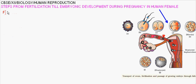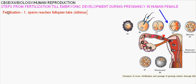During fertilization, the sperm is released inside the vagina. It swims past the cervix and reaches the fallopian tube at the part called the isthmo-ampullary junction. The ovum also reaches the isthmo-ampullary junction in the fallopian tube at the same time, and fusion of both male and female gametes takes place.